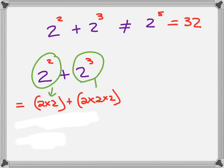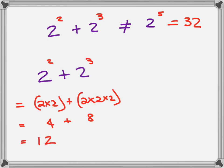Then you're going to find your answer to each of those brackets and add those answers. So this answer is 4 and this one is 8. And 4 plus 8 comes to 12. You can see it's a far cry from 32.